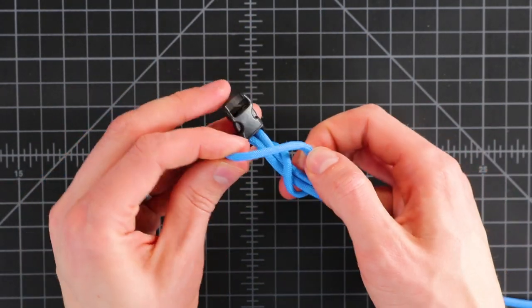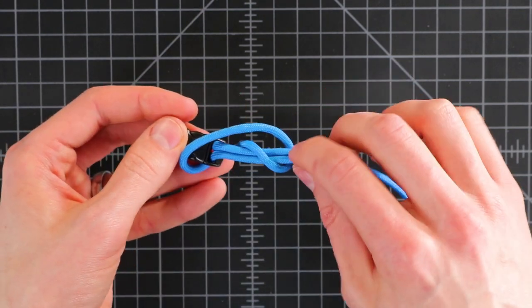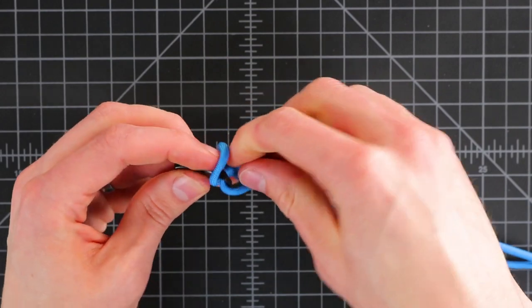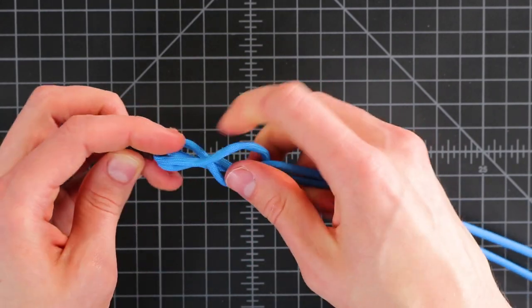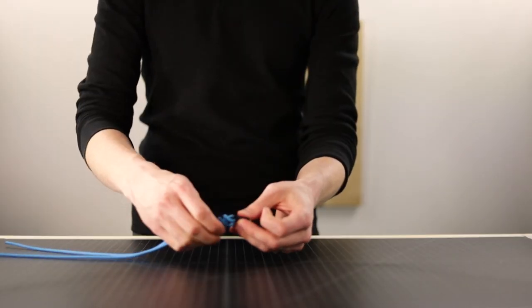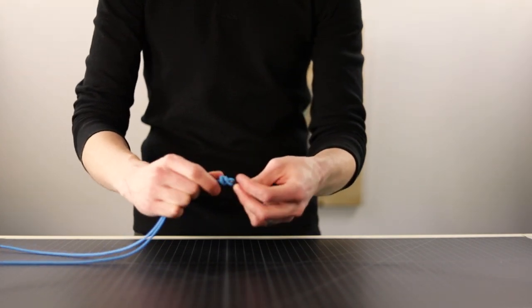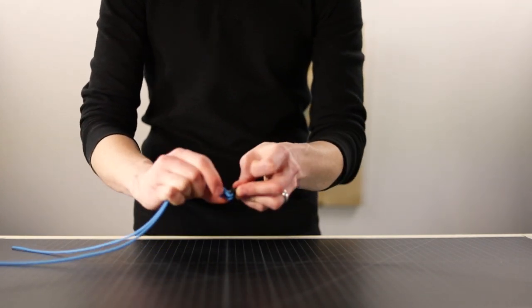And then you'll have to get the extra twist out of there. This one's easier to make with flat webbing because then you can tell if your cord is twisted or not. Once you get the twist out, tighten it down.